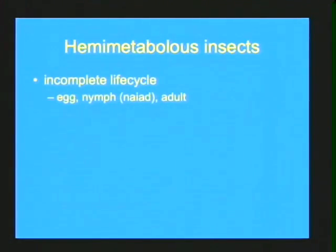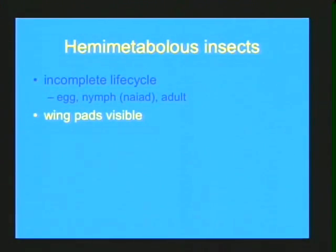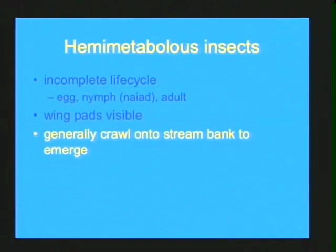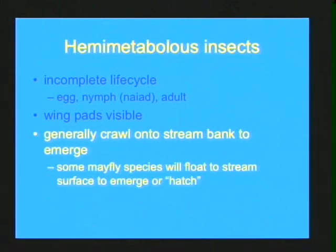The first group we are going to examine are the hemimetabolous insects. Hemimetabolous just means incomplete life cycle — they go through the egg, the nymph or naiad, and adult stages. They do have wing pads visible on those meso- and metathoraxes. They generally crawl onto a stream bank on stones or twigs to emerge in what's sometimes called a hatch or mass emergence. The only exception are mayflies, which float to the surface and do a mass hatch, emerging on the water surface.